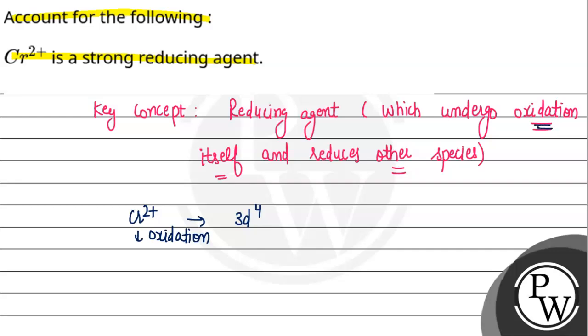We know that oxidation means electron loss. So when it undergoes oxidation, it will become Cr³⁺. The configuration of Cr³⁺ will be 3d³.